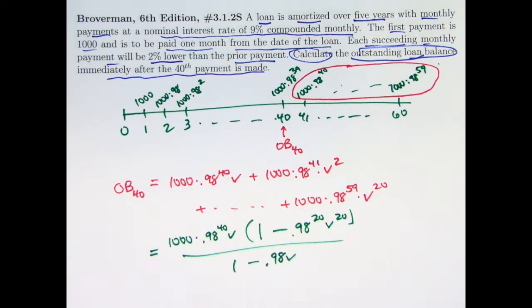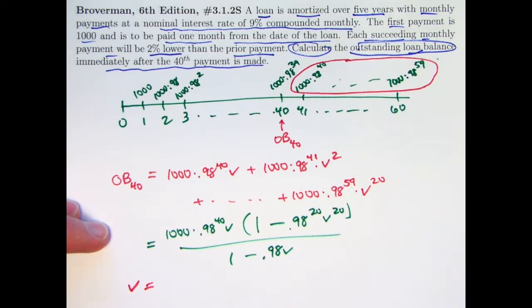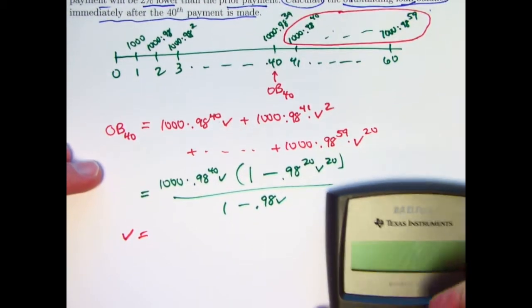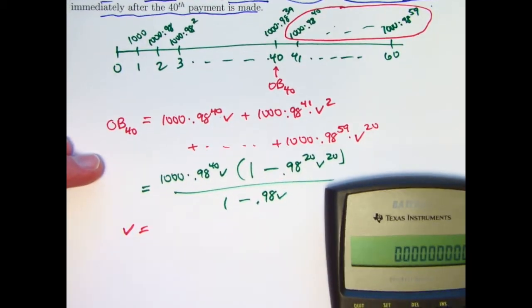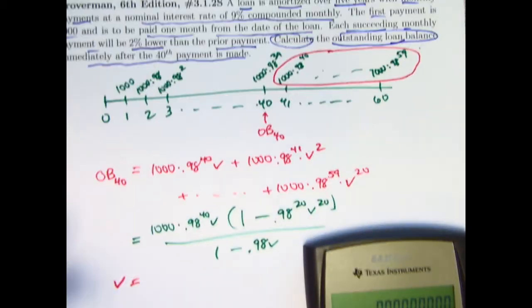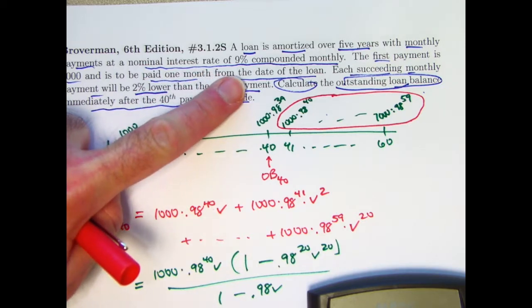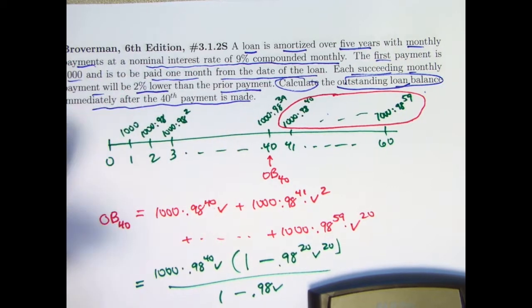All right, so let's find, first of all, V. I'll go ahead and I can use my calculator with some storage functions here. Let's go ahead and do that. But I'll write things down as well. So first of all, again, the nominal interest rate is 9% compounded monthly. So that's an annual rate, compounded monthly.